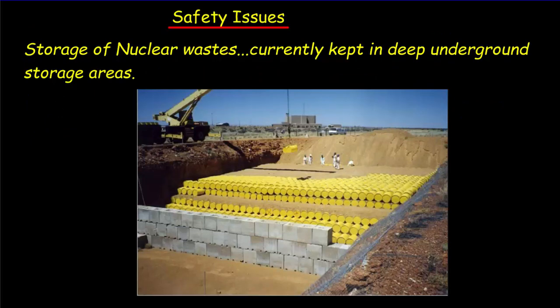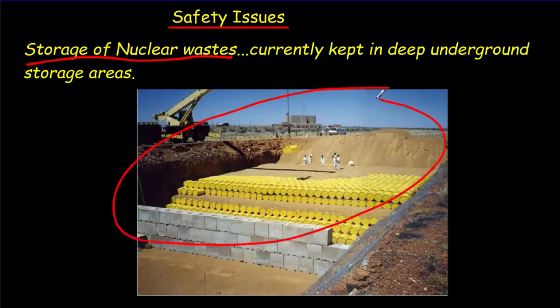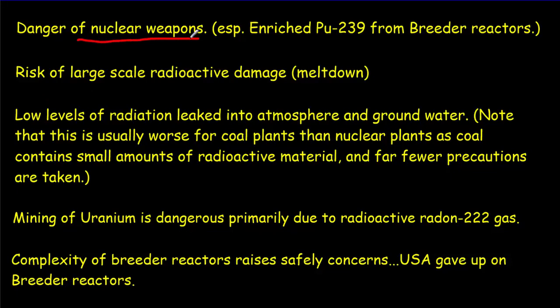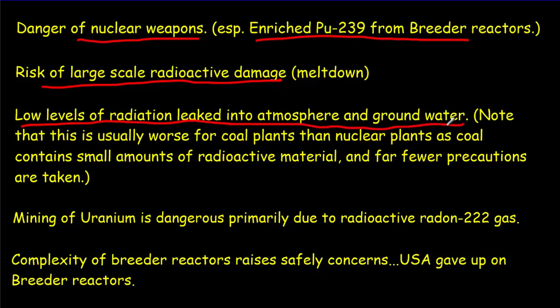There are some important safety issues when it comes to nuclear power. First and foremost, you've got to store all that nuclear waste. And that's generally done in these underground facilities like the one below. Naturally, you're not going to want that in your backyard. It also increases the risk of nuclear weapon proliferation. In particular, because we can produce so much of this plutonium-239 in a breeder reactor. And then with cases such as Chernobyl, Three Mile Island, and Fukushima, we have the risk of large scale radioactive damage, such as with a meltdown. And in the case of Fukushima, we might build a very safe nuclear reactor for normal operation. But what happens if there's a natural disaster like a tsunami? Moreover, there's always low levels of radiation leaked into the atmosphere and into the groundwater. There's less of this for nuclear power plants than there is for coal plants, though.